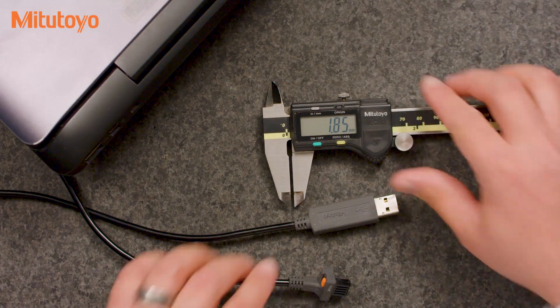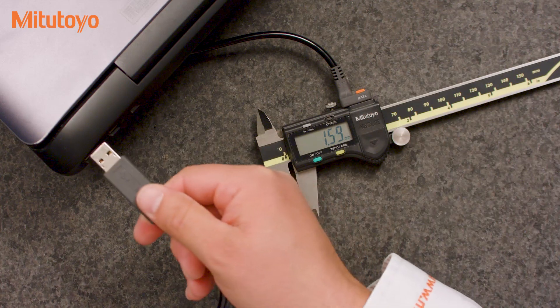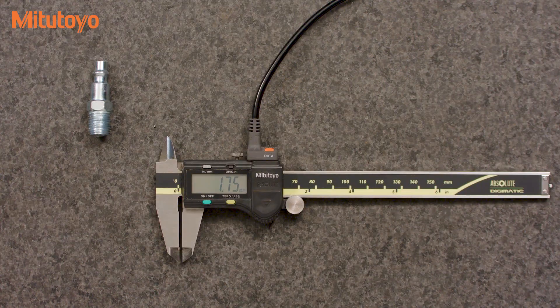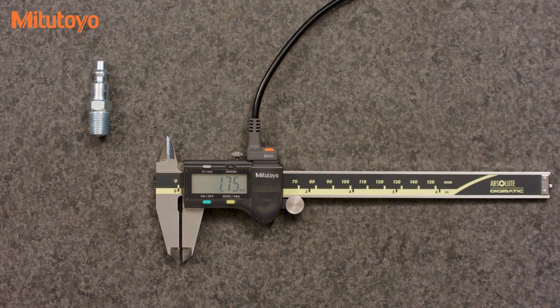To begin collecting data, simply plug one end of the cable into your measuring tool and the other end into an available USB port. Once the input tool is connected, data can be transferred into any program that can accept data from a USB keyboard.